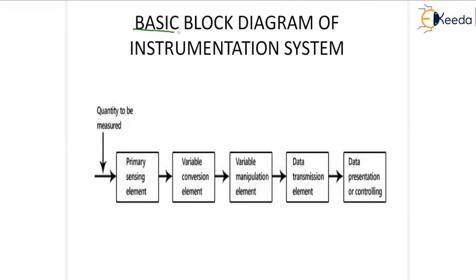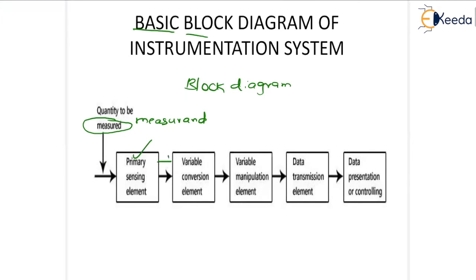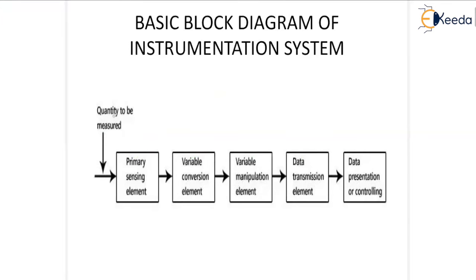Now let's look at the block diagram of any instrumentation system — the generalized basic block diagram. The quantity to be measured, called the measurand, is given as input to a primary sensing element. The output of this primary sensing element is given to a variable conversion element, which gives its output to a variable manipulation element. The output of this manipulation element is given to a data transmission element, and then it is fed to data presentation or controlling.